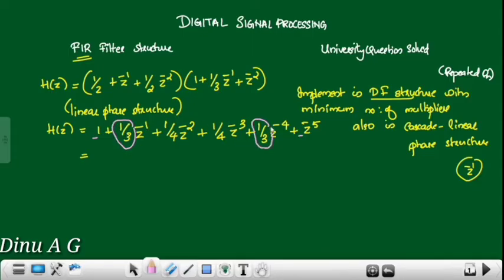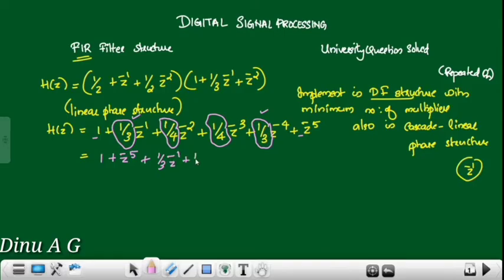We check the linear phase: this coefficient is 1/4, this is also 1/4, this is also 1/4 — this is symmetry. That gives us 1 plus z raised to minus 5, then 1/3 z raised to minus 1 plus 1/3 z raised to minus 4, and 1/4 z raised to minus 2 plus 1/4 z raised to minus 3.